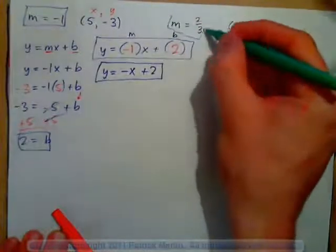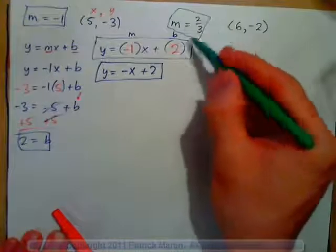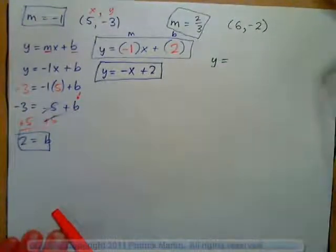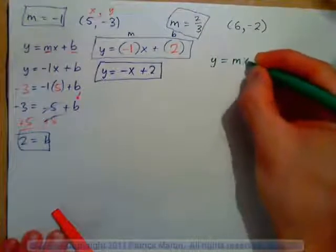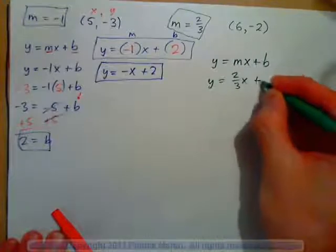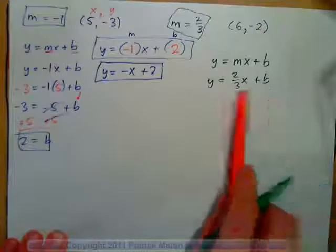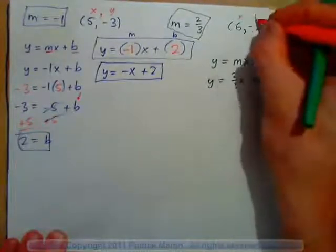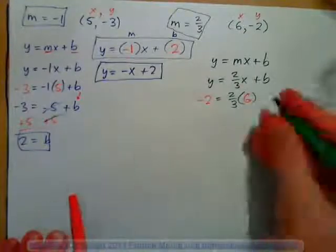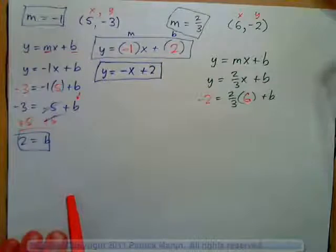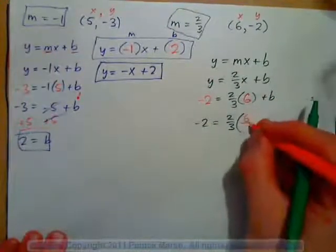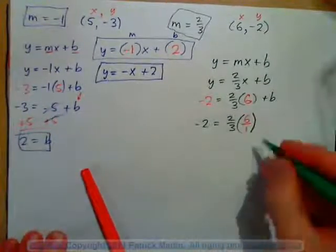Next example: m equals 2 thirds and the line goes through the point (6, negative 2). Find the equation of the line. First, write down the slope-intercept form: y equals mx plus b. We know m is 2 thirds, so y equals 2 thirds times x plus b. Now substitute the point — x is 6, y is negative 2 — giving negative 2 equals 2 thirds times 6 plus b. We can write 6 as 6 over 1 to help multiply the fractions.